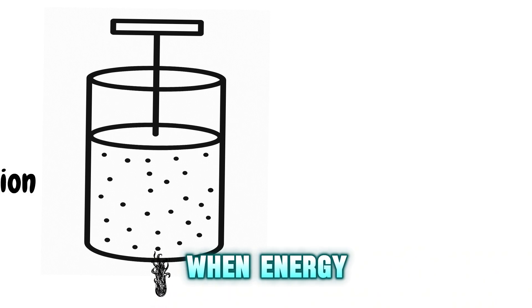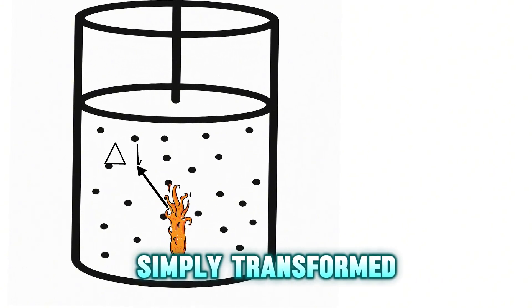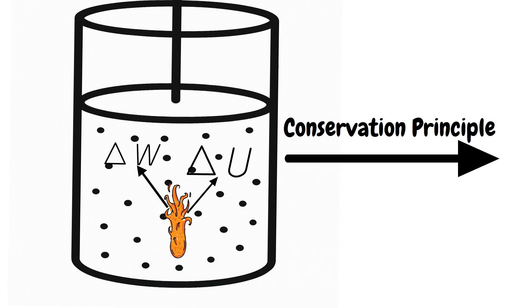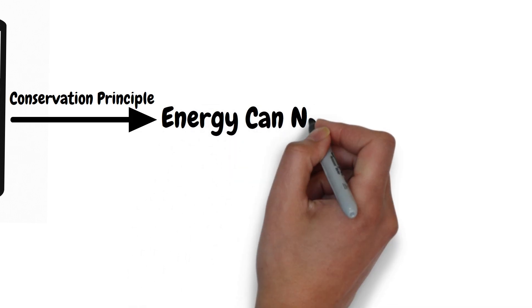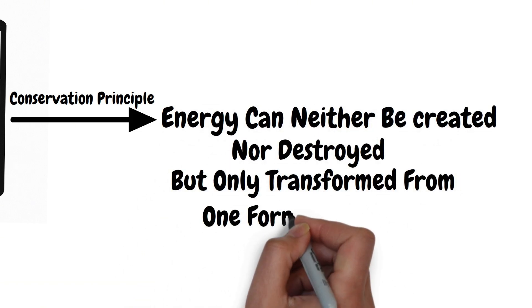As seen in our example, when energy is added to the system, it is not destroyed. It is simply transformed into work and internal energy. This follows the conservation principle, which states that energy can neither be created nor destroyed, only transformed from one form to another.